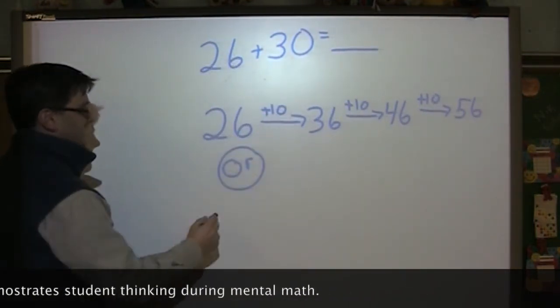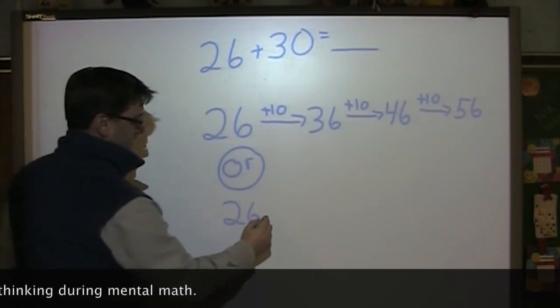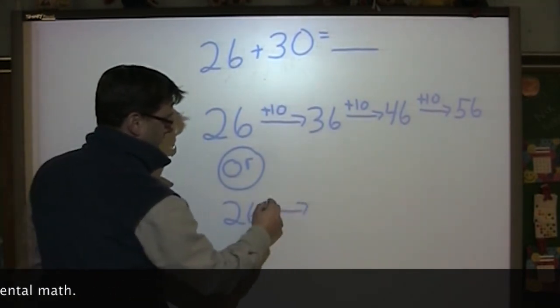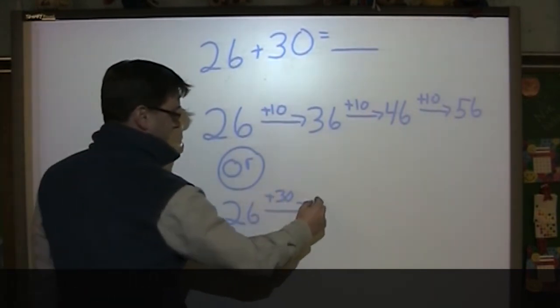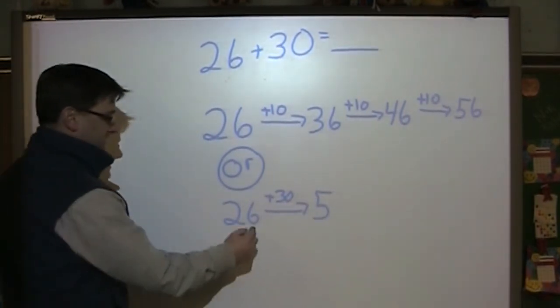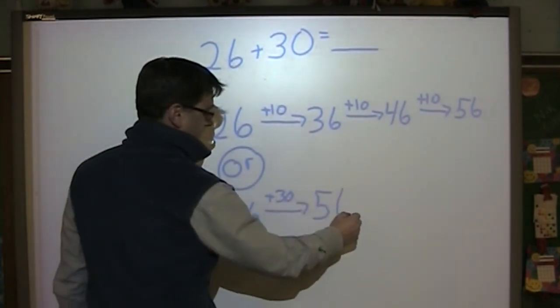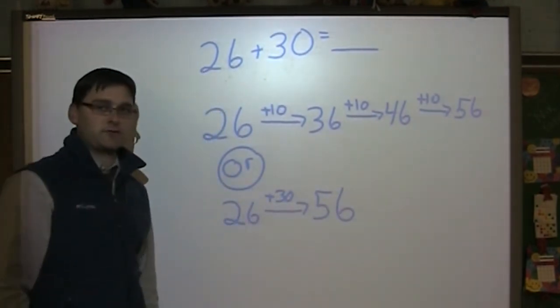Or we can do 26 arrow plus 30 all at one time. And we can add 2 tens plus 3 tens equals 5 tens, 6 ones plus 0 ones equals 6 ones or 56.